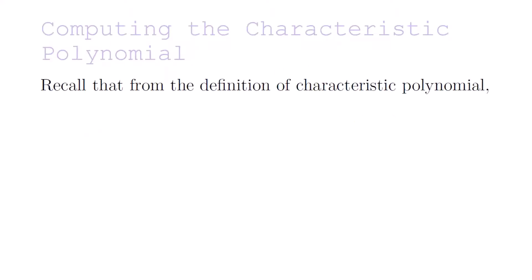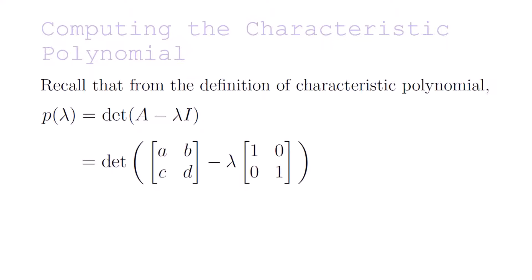Recall that from the definition of characteristic polynomial, P of lambda equals the determinant of A minus lambda I. This is equal to the determinant of the matrix with entries A, B, C, D minus lambda times the 2x2 identity matrix, which gives the matrix with entries A minus lambda, B, C, and D minus lambda.